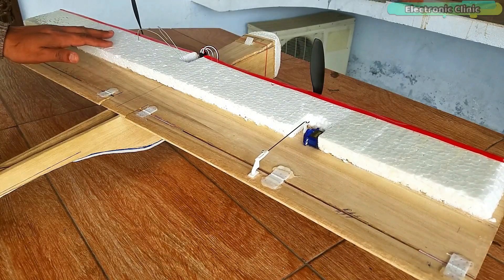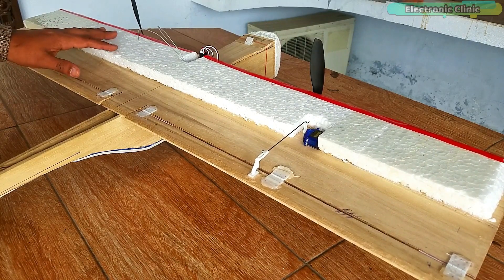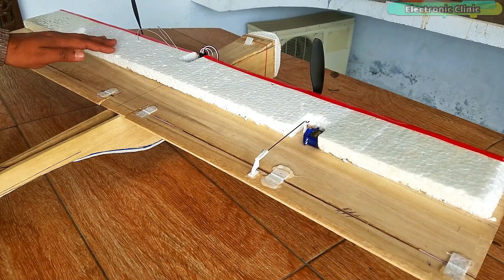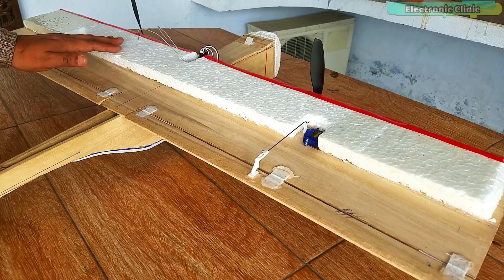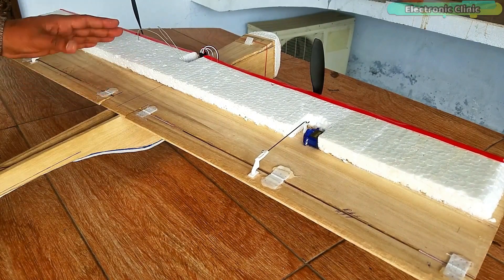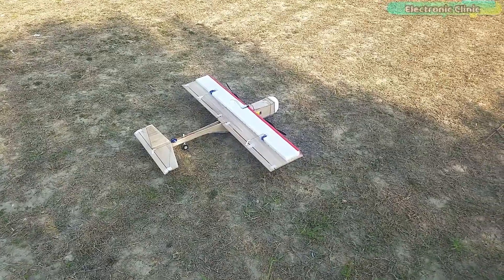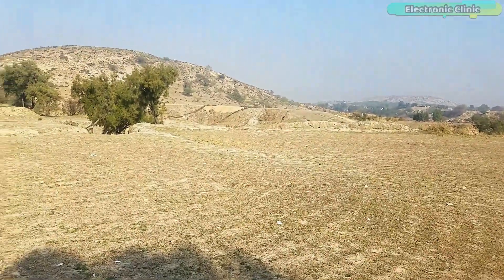I selected the KFM2 type airfoil as it is easy to build and adds more strength to the wing. The KFM2 type airfoil is good for heavier models — it gives higher lift and nice stability. The KFM2 airfoil should be 50 percent of the wing chord: 50% times 8 inches equals 4 inches. Its thickness should be 7 to 9 percent of the chord, so KFM2 airfoil thickness equals 7% times 8 inches, which is 0.56 inches. After modifying the RC airplane I checked the center of gravity again, and it was ready for the final flight test.